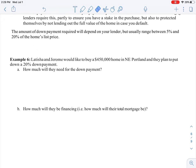Example 6: Leticia and Jerome would like to buy a $450,000 home in northeast Portland. They plan to put down a 20 percent down payment, so they're being the really wonderful consumer - they have their act together to buy a home. So it says, how much would they need for the down payment?